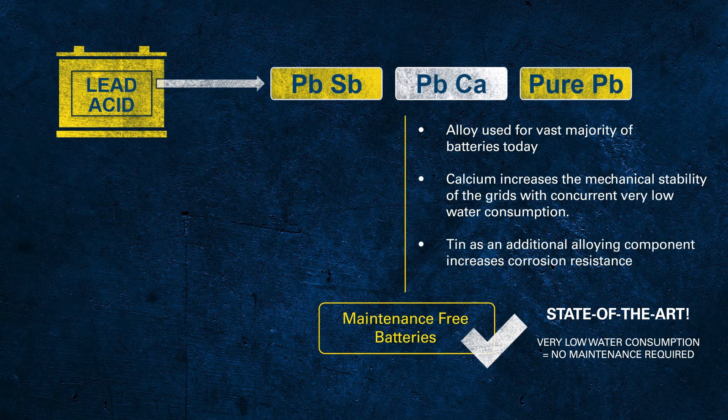We also add tin to the alloy in order to increase the corrosion resistance of the grids. It is indeed a science in itself to find the right composition of the individual materials. We have several chemists who are constantly working on the right alloys and recipes for our active mass.